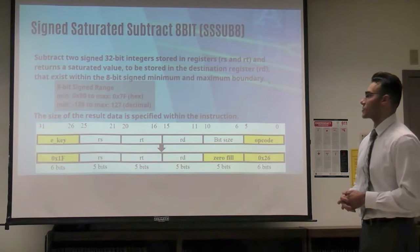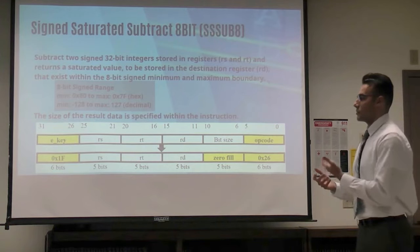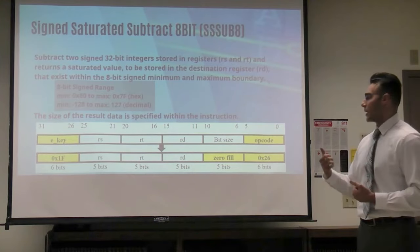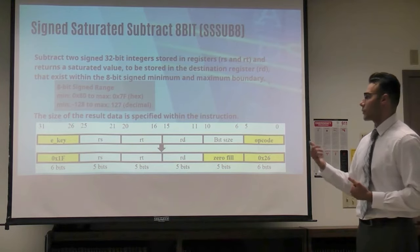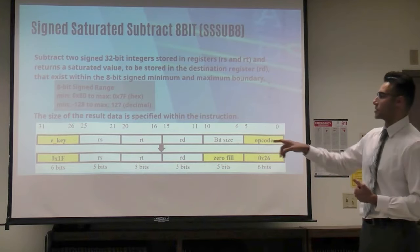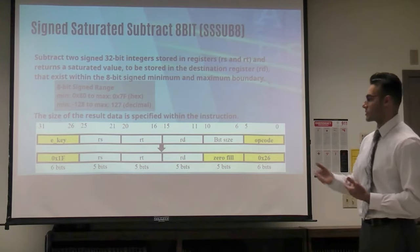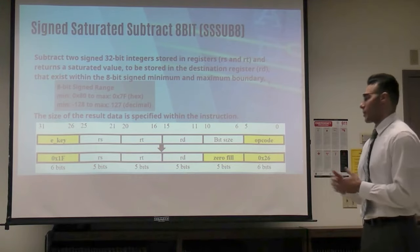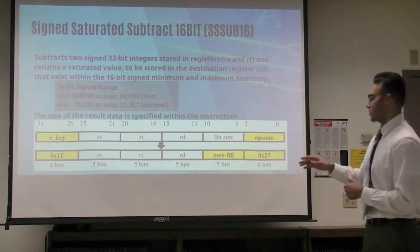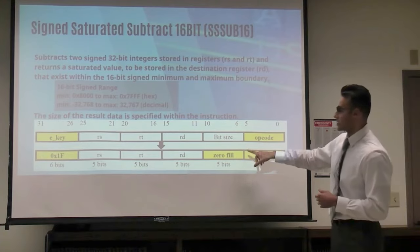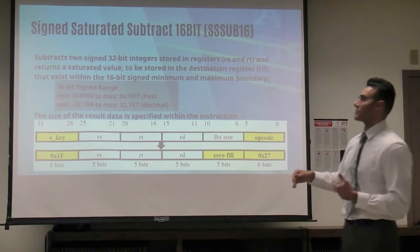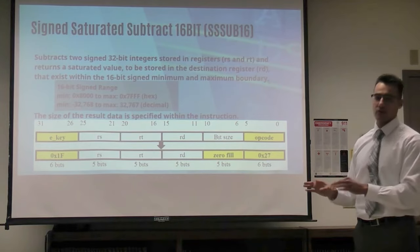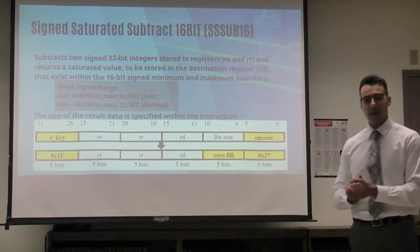For the signed saturated subtraction, the user specifies source registers RS and RC, and we subtract them, then compare to the range. If it's between the range it will save to the initial register; otherwise it will saturate to the maximum or minimum level. The bit size will always be zero because the instruction is specific — there are separate opcodes for 8-bit and 16-bit cases.